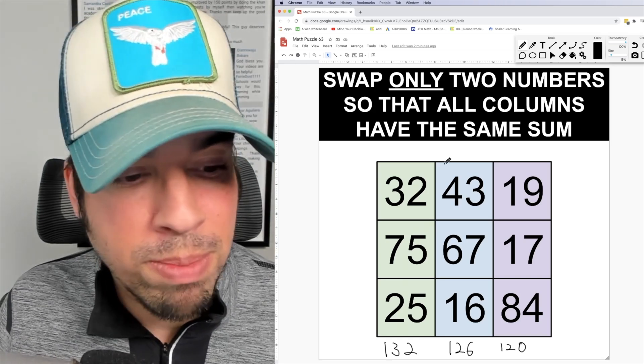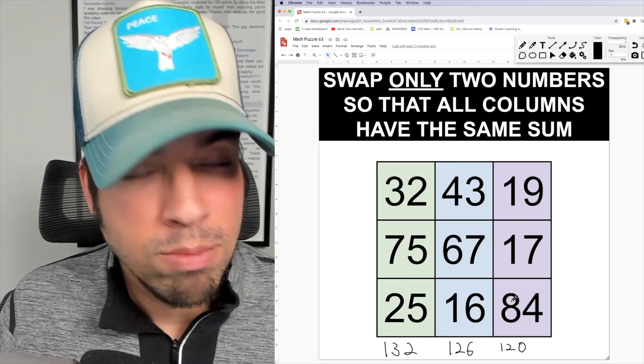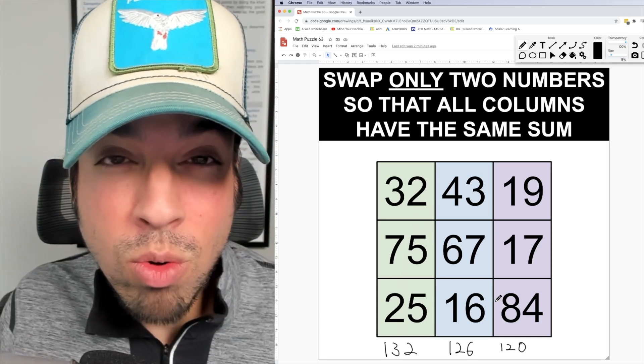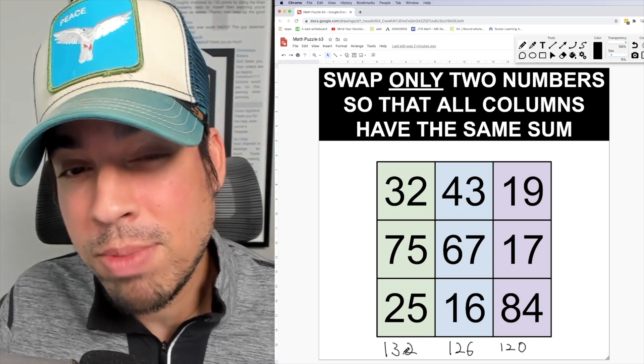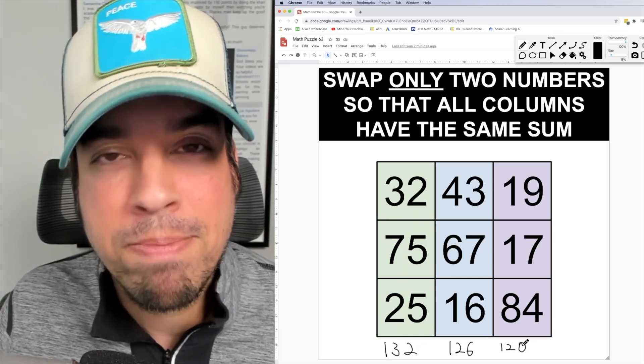That means I'm going to make a swap between the green and the purple column. Moreover they're both going to have to go to 126 to meet the middle column. So this one needs to come down by six, this one needs to go up by six.